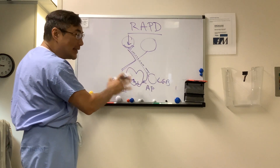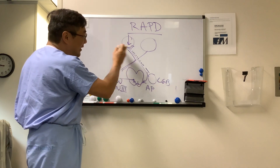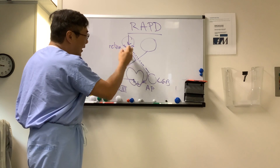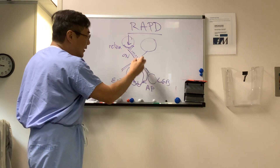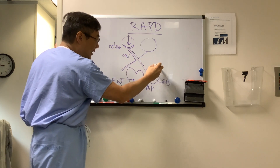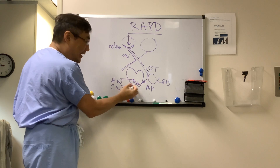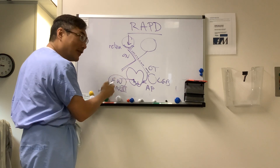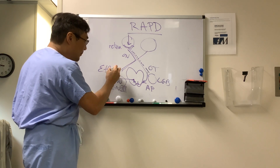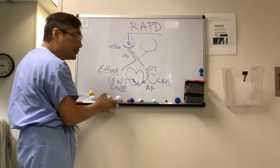When you have an RAPD, you have to have a lesion somewhere between the retina, optic nerve, chiasm, optic tract, and the pre-tectal nuclei — before you get to the efferent pathway, which is cranial nerve three.